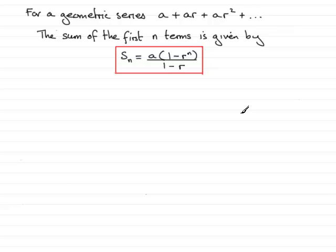So what I want to do is prove this to you. We'll just put proof here, and what I would suggest you do is just say let Sn, the sum of the first n terms, equal a for the first term plus the second term, which we multiply the first term by r, and that gives us ar.